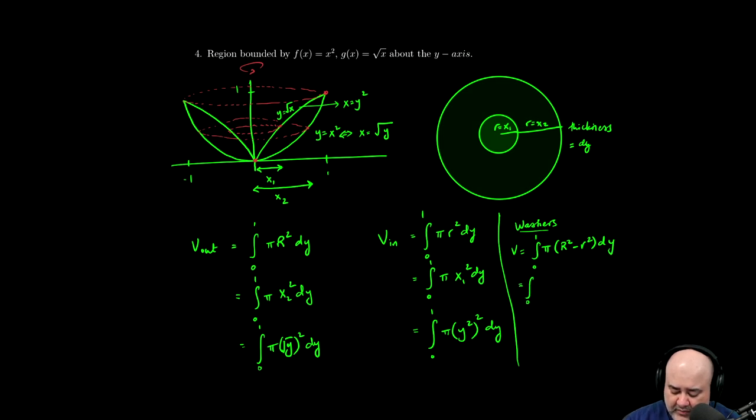So I would write the integral from zero to one of pi times, now the outer radius squared, the outer radius from here to here, is the distance from here to here, which is going to be given by root y.